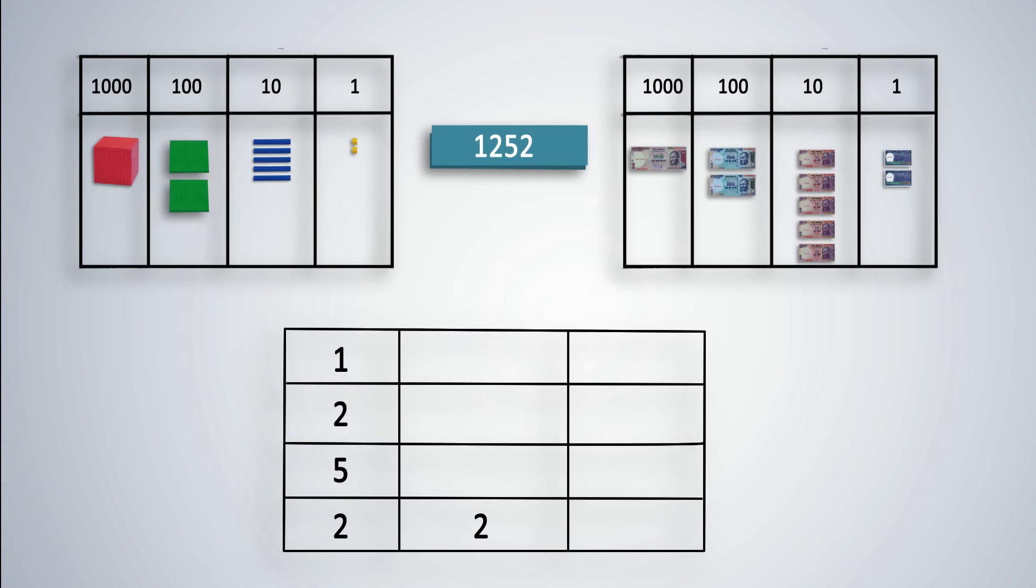The place value of a digit is the value it acquires because of the place it occupies in the number. To calculate the place value, we multiply the digit by the value of the place it occupies. Since 2 is in the 1s place, the place value is 2 multiplied by 1, which is 2. There are 5 rods or 5 notes in the 10s place. So the face value of 5 is 5 and the place value of 5 is 5 multiplied by 10, which is 50.